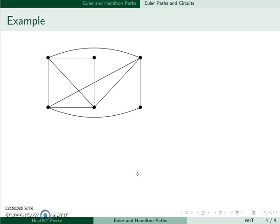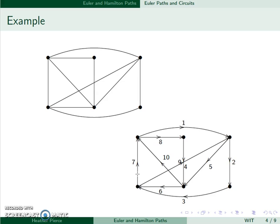For example, here's a graph that does actually have an Euler circuit. And here it is. If I start at this vertex, we can go 1, 2, 3, 4, 5, 6, 7, 8, 9, and then 10. So you can see I went down every edge, and I started where I ended.